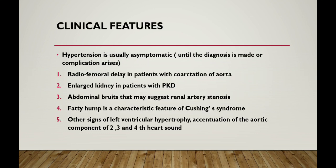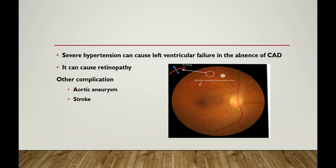Coming to clinical features of hypertension. Hypertension is usually asymptomatic until the diagnosis is made or a complication arises. Features include radio-femoral delay in patients with coarctation of the aorta, enlarged kidneys in polycystic kidney disease, abdominal bruits suggesting renal artery stenosis, fatigue characteristic of Cushing's syndrome, and signs of left ventricular hypertrophy including the aortic component of the second, third, and fourth heart sounds. Severe hypertension can cause left ventricular failure, hypertensive retinopathy, aortic aneurysm, and stroke.